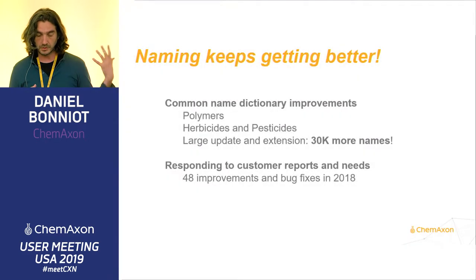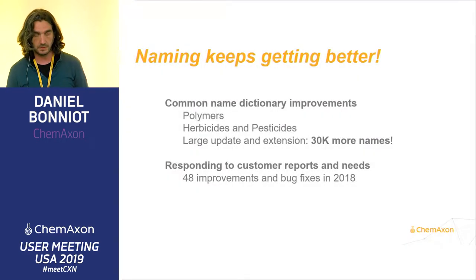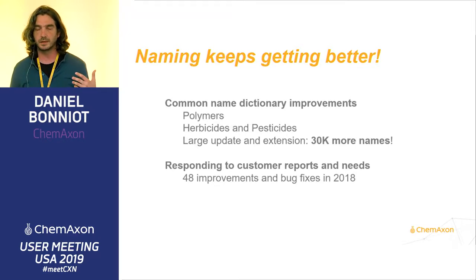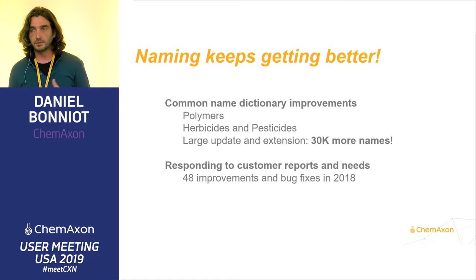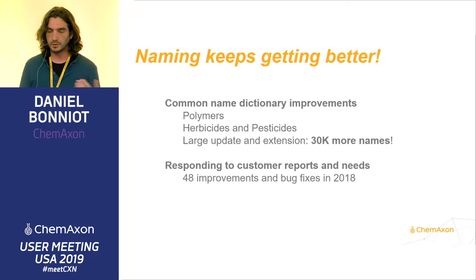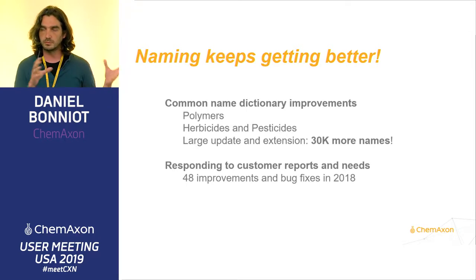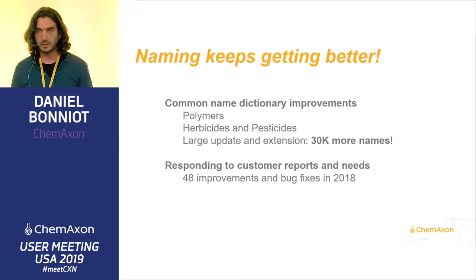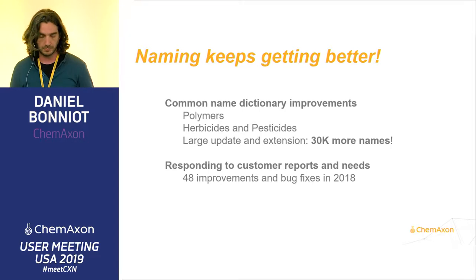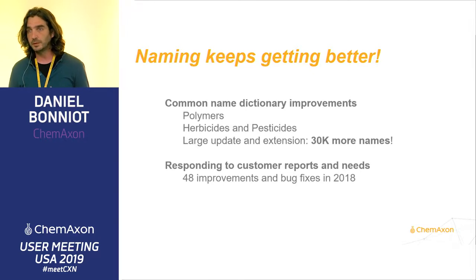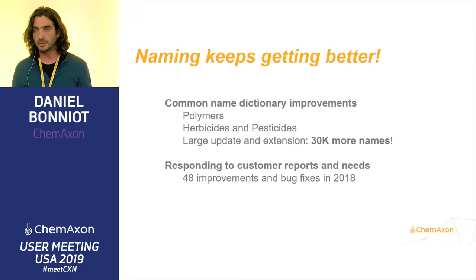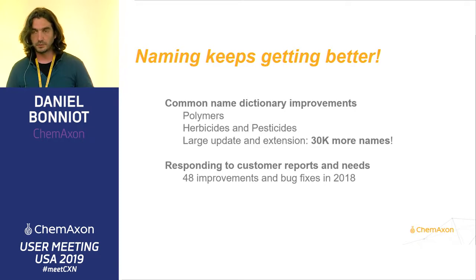Now I'll mention what has been changing recently. Focus has been on the dictionary we use for handling common names and drug names. Based on requests from customers and potential customers, we decided to go into new areas. One is polymers — common names of polymers — which we didn't have before. Another is herbicides and pesticides. We now have specific dictionaries integrated, so out of the box, if you use name-to-structure, you will also understand those common names. We also made an update to the usual dictionary that added 30,000 new names, including new drug names from the last year.